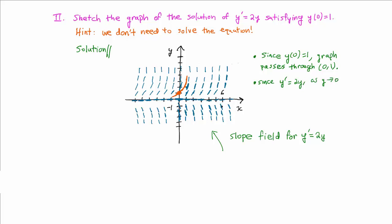As y approaches 0, y prime also approaches 0, and the graph becomes approximately horizontal.